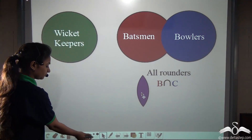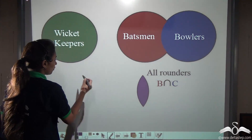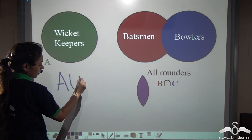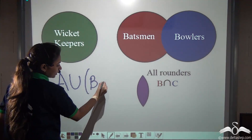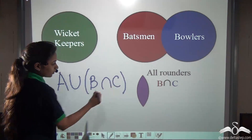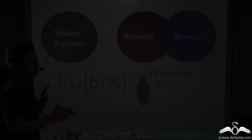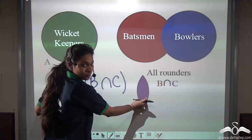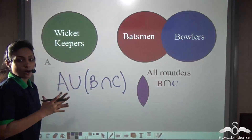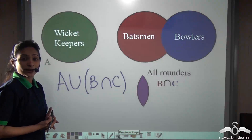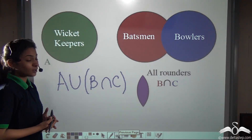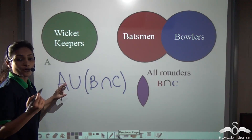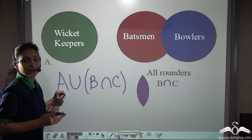So what did you want? You wanted A union with B intersection C. You wanted some players who were both batsmen and bowlers, and some wicket keepers along with them. But how will you get it? Well, in sets we have a relation for three sets A, B and C.